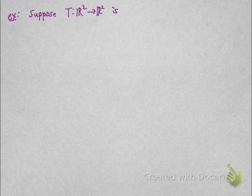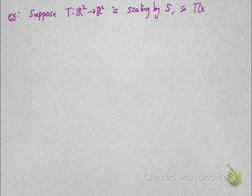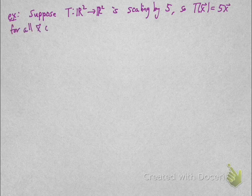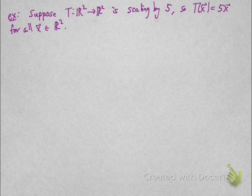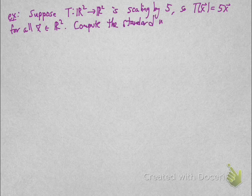Let's look at some examples. Suppose T is the linear transformation from R^2 to R^2 given by scaling by a factor of 5, so T(x) equals 5x for all x. Let's compute the standard matrix for T.